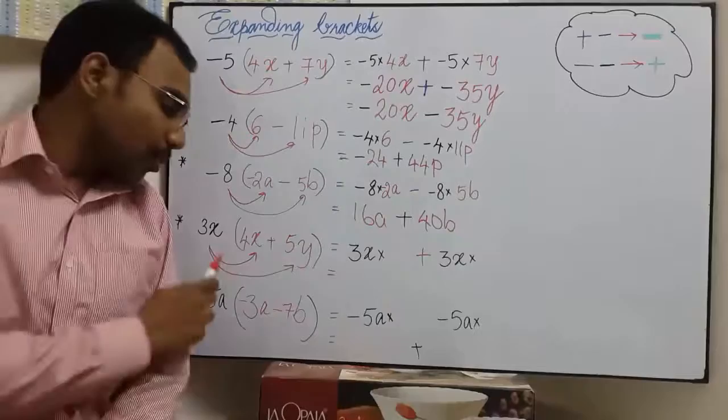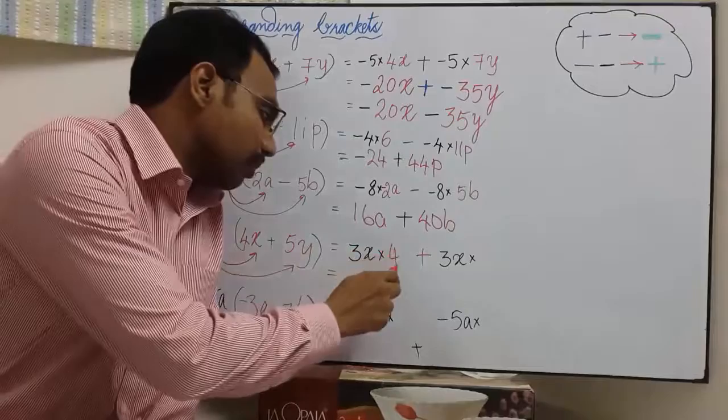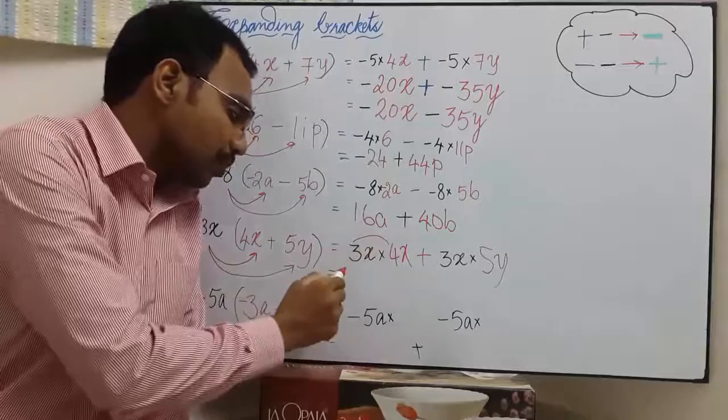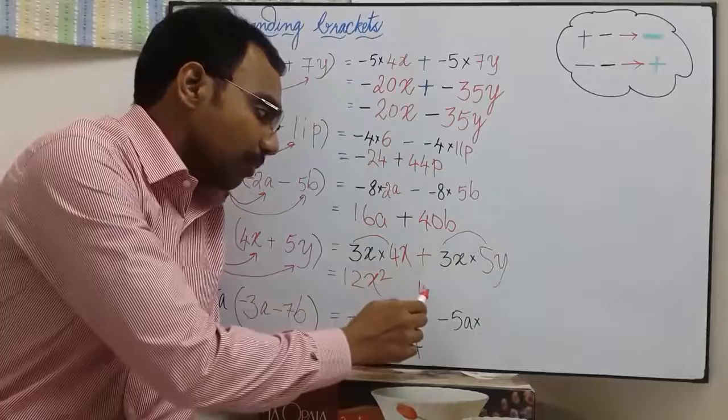3x times of this family 4x plus 5y. So 3x is distributed to 4x and 3x is distributed to 5y and this distribution happens over addition. Let us multiply numbers first. 3 times 4 is 12 and x times x can be written as x square. Similarly, 3 times 5 is 15 and x times y is xy.